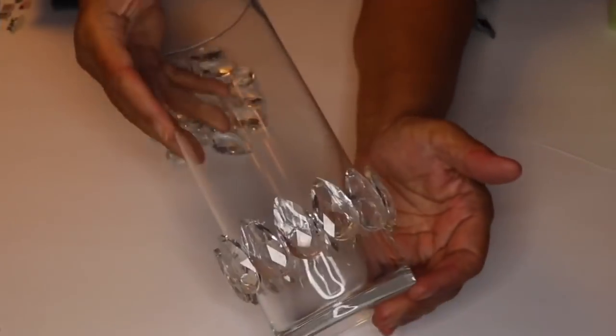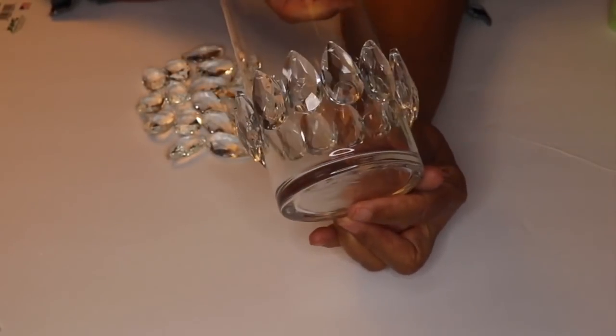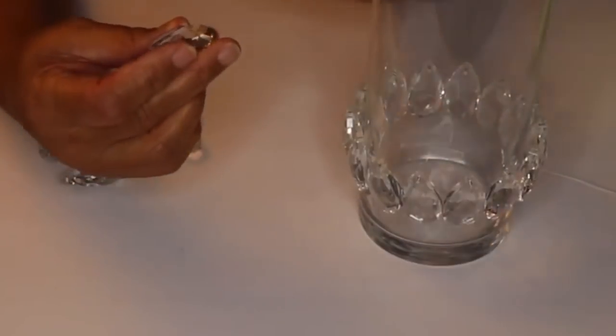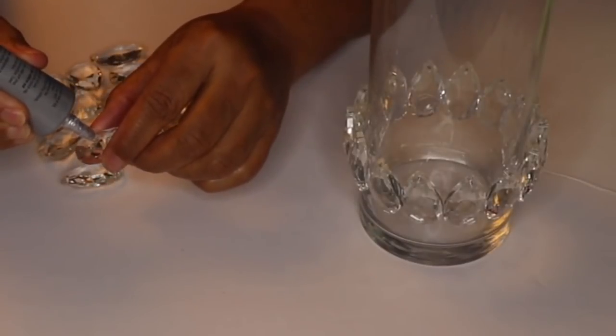I added the remaining pendants, let it sit for an hour and now I'm ready to move on to the next step. Starting on my second row, I took one pendant and placed it between two of the first pendants to get an idea of where I needed to add the glue.